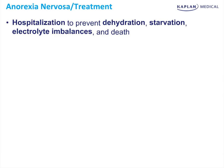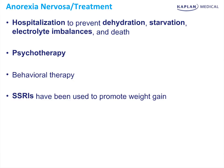In severe cases we hospitalize these patients to prevent dehydration, starvation, electrolyte imbalance, and death — avoiding those cardiac arrhythmias. After normalizing values, psychotherapy can re-correct the patient's body image and show them they are underweight. Behavioral therapy and SSRIs are also used because they promote weight gain and help with the overall mood of the patient.